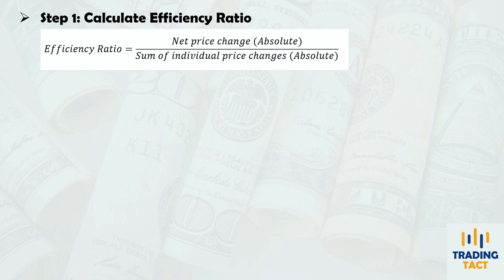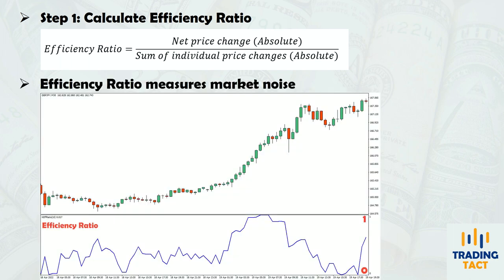The first step is to calculate the market's efficiency ratio, which is defined as the absolute net change in price divided by the absolute sum of the individual price changes over that period. I have created a separate video explaining how the efficiency ratio is calculated and how to use it as a breakout filter for trend following strategies. The efficiency ratio is a measure of a market's noise level, and oscillates between 0 and 1.